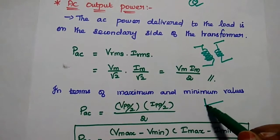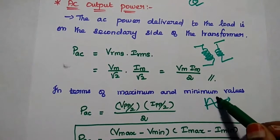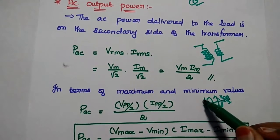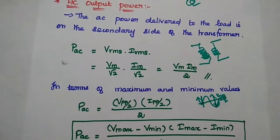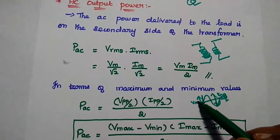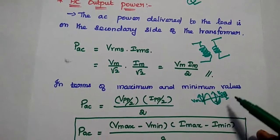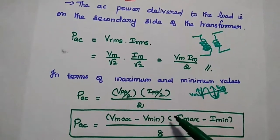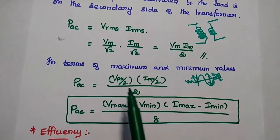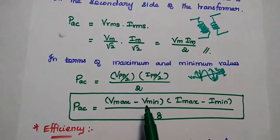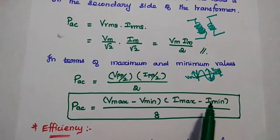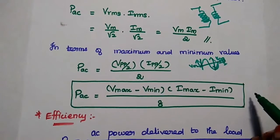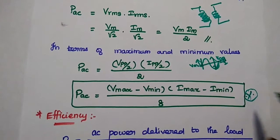For example, the overall value is the peak-to-peak value. If it is divided by 2, we can get only the maximum value. So Vm is equal to Vpp divided by 2. Similarly, Im is equal to Ipp divided by 2. Here the peak-to-peak voltage is Vmax minus Vmin, and Ipp is Imax minus Imin. Then, 2 into 2 into 2 gives 8. So the formula for AC output power is (Vmax − Vmin)(Imax − Imin) divided by 8.